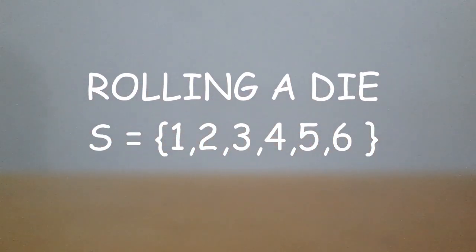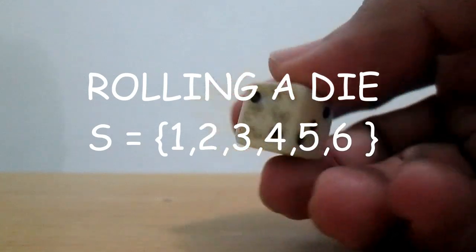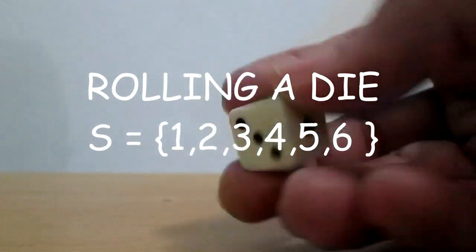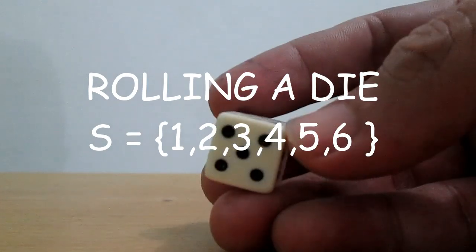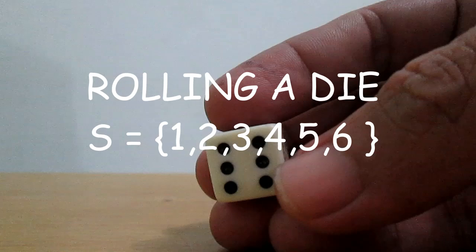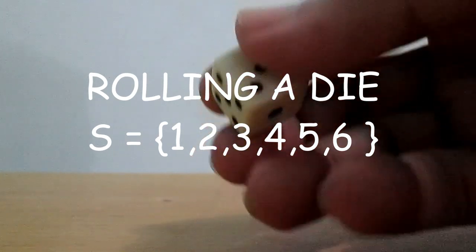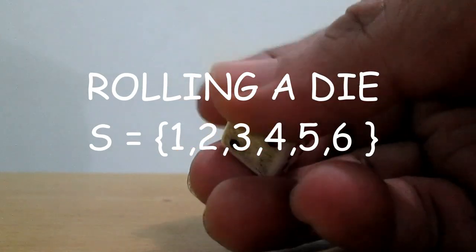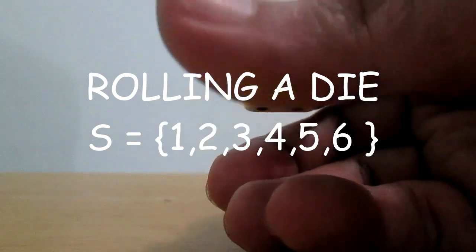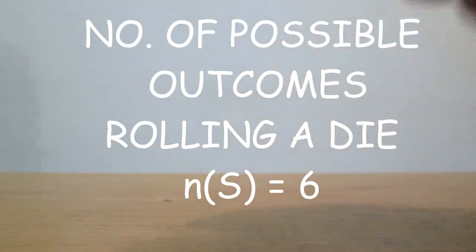The sample space in rolling a die is S equals {1, 2, 3, 4, 5, 6}. A die has 6 faces. Each face of the die denotes the numbers 1, 2, 3, 4, 5, and 6. The number of possible outcomes is 6.